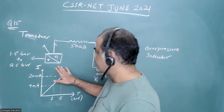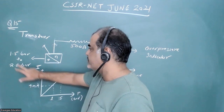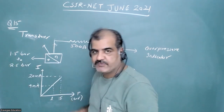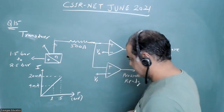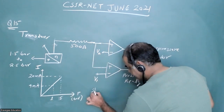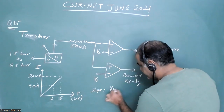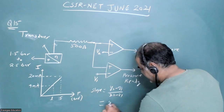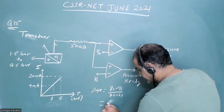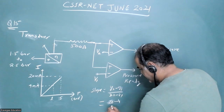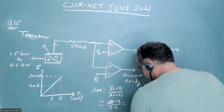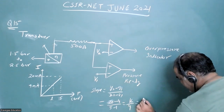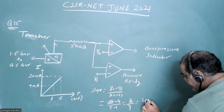We have to maintain pressure from 1.5 bar to 2.5 bar in this experiment. The slope of this graph is (y2 - y1) / (x2 - x1), that is (20 - 4) / (5 - 1), which gives us 16 upon 4. So the slope of this graph is 4 milliampere per bar.